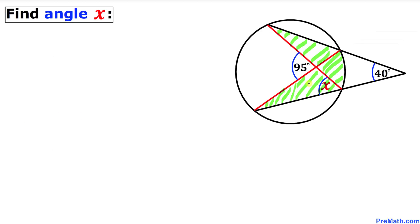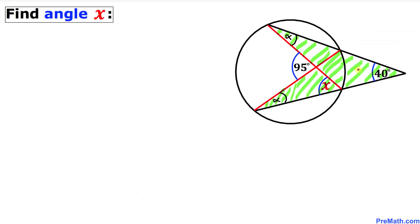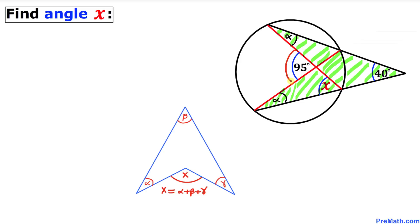Now let's return our focus to the original problem and look at this shaded part. These two inscribed angles are congruent — if I call this angle alpha, then this angle must be alpha as well. Focusing on the next shaded part, this angle equals the sum of these three interior angles according to this fact. Therefore we can write: alpha plus alpha plus 40 degrees equals 95 degrees.